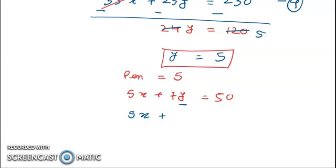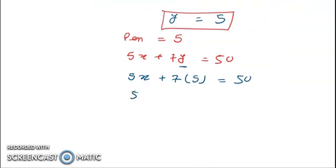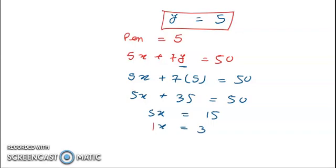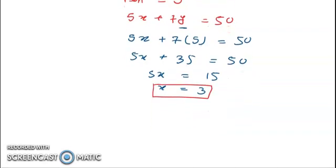Substituting y equals 5: 5x plus 7 into 5 is equal to 50, so 5x is equal to 15, therefore x is equal to 3. The price of one pencil is rupees 3. Hence, this is the solution. Thank you.